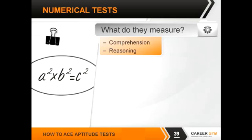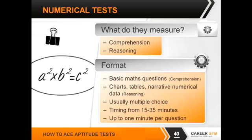So what do they measure? Again, we've got comprehension and reasoning type tests. The format is either basic maths questions of the sort you may remember from your A-level or GCSE textbooks, or more complex charts, tables, or even narrative numerical data — which is what you'll face at the more senior levels, so graduate and above. Usually multiple choice, so at least you can narrow down your options. Timing is pretty similar to the verbal: 15 to 35, up to one minute per question.